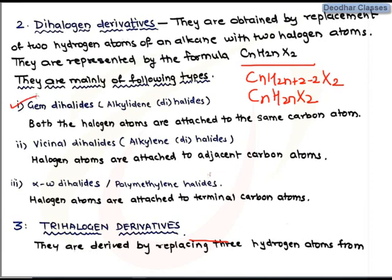Dihalogen derivatives are further classified as geminal dihalides, vicinal dihalides, and alpha-omega dihalides. In geminal dihalides, also called alkylidene dihalides, both halogen atoms are on the same carbon atom. In vicinal dihalides, the halogen atoms are on adjacent carbon atoms. Alpha-omega dihalides, also called polymethylene dihalides, have the halogen atoms attached to the terminal carbon atoms of the chain.